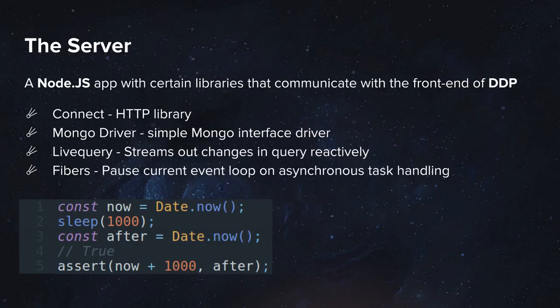So why does Meteor use fibers and not async functions? I believe because back in the day the concept of async functions did not even exist, therefore they had to go for a binary package instead. But I believe that with time they would migrate completely into async functions. Fibers are good to prevent race conditions, especially for the inexperienced developer, where it's hard to detect such a problem and especially fix it.